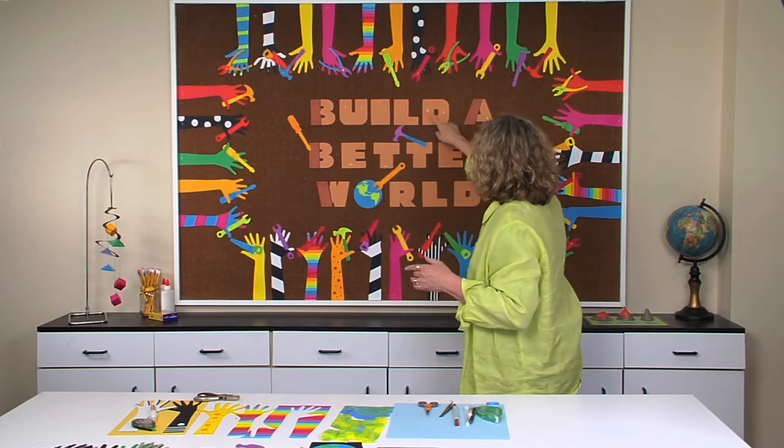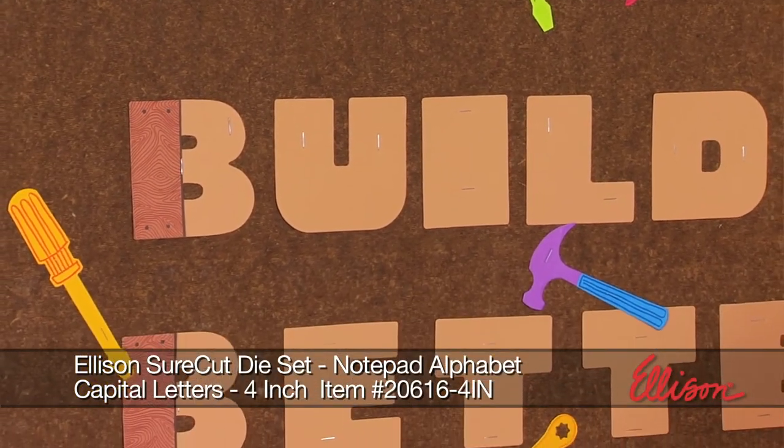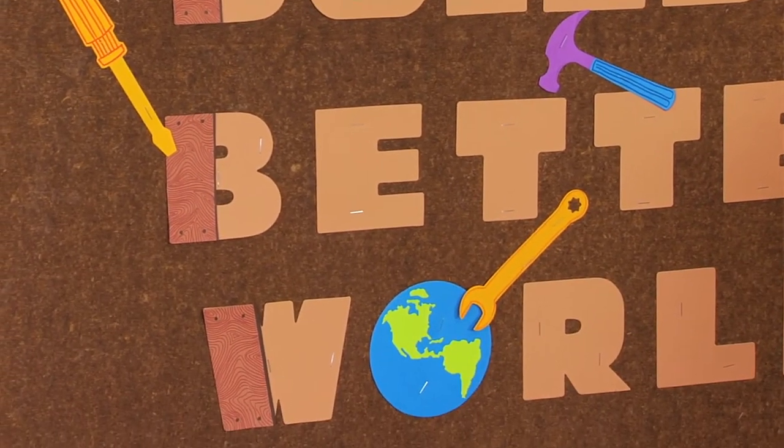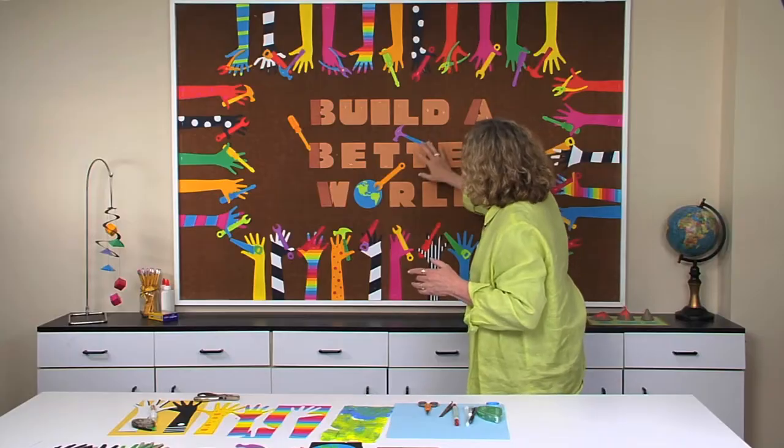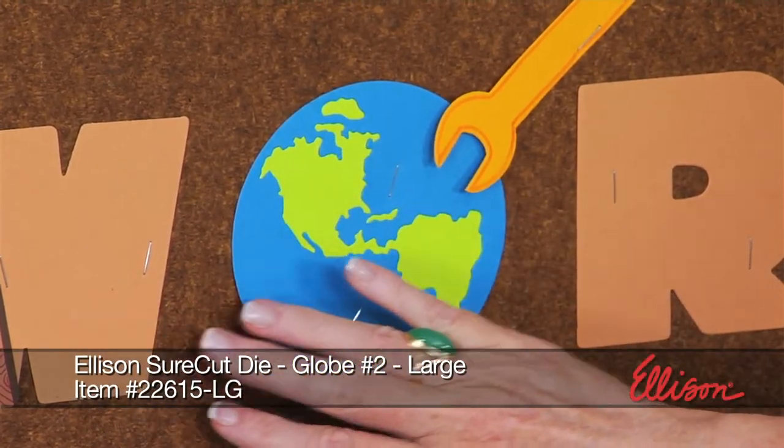I've used the notepad alphabet for the lettering, and we're going to look at how to add the detailing to make it look more like a plank of wood on just the initial letter of each word. I've used instead of the O, the globe is perfect to represent the O in the word world.